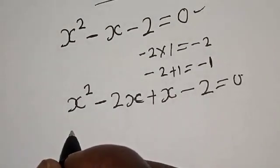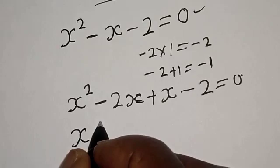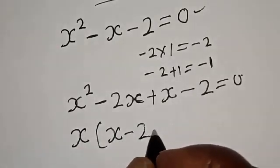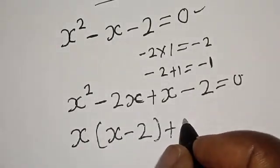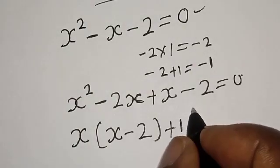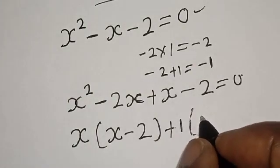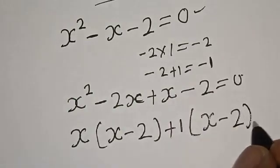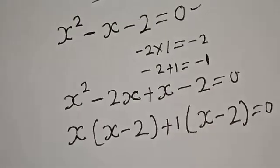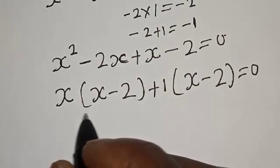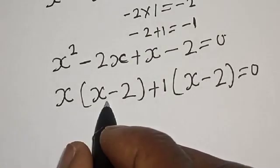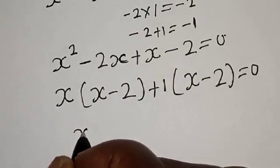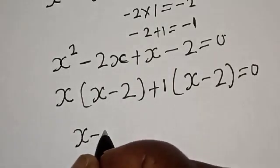Therefore we have s squared minus 2s plus s minus 2 is equal to 0. Now we group: s(s minus 2) plus 1(s minus 2) is equal to 0. We have s and 1 as one group, and s minus 2 as the common factor.